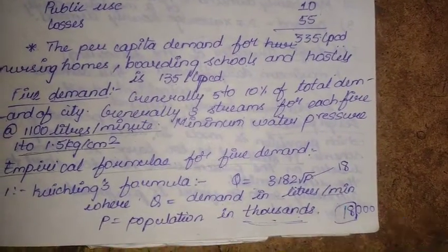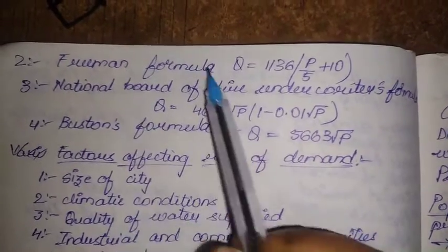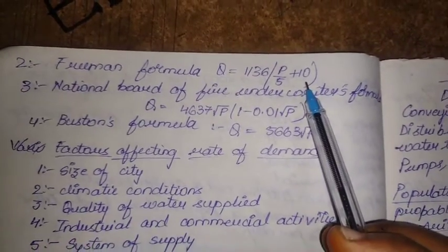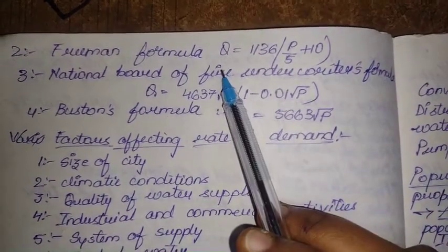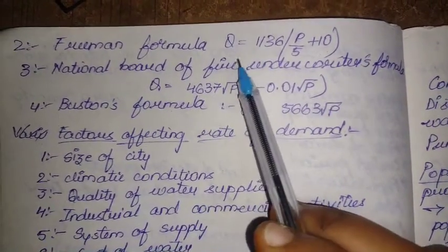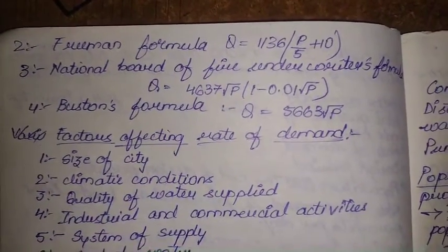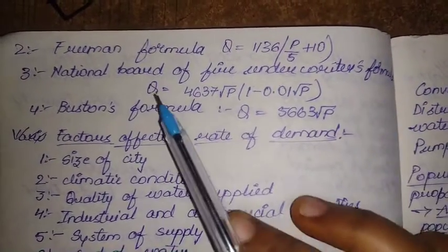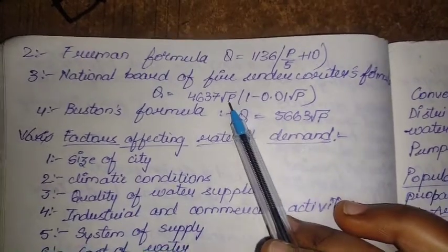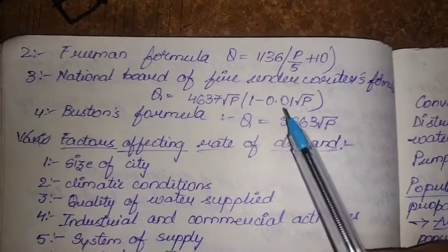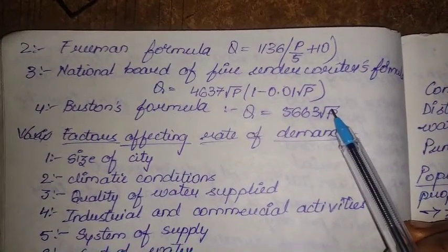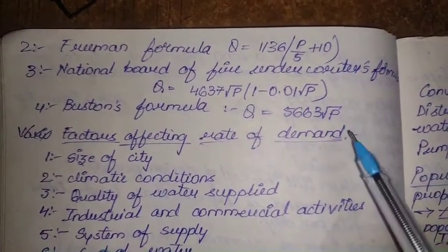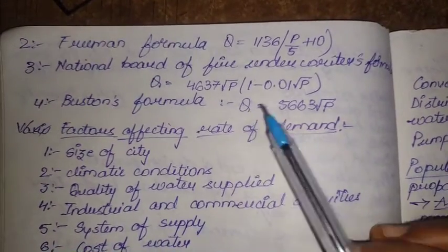The Freeman formula is Q = 1136 × (P/5 + 10), where again P is in thousands and Q is the quantity of water required in liters per minute. The National Board of Fire Underwriters formula is Q = 4637√P × (1 − 0.01√P). Buston's formula is Q = 5663√P. In all these formulas, P is substituted in thousands to get Q in liters per minute.